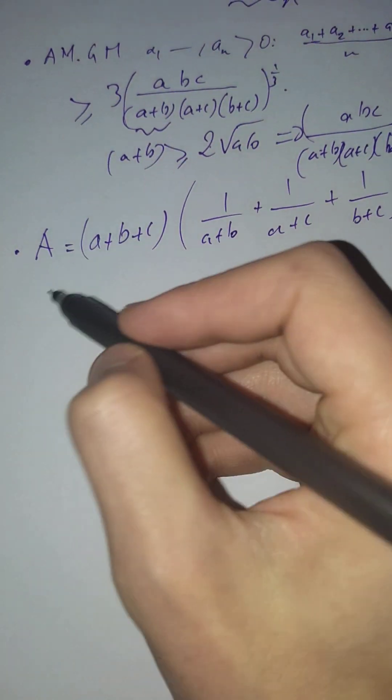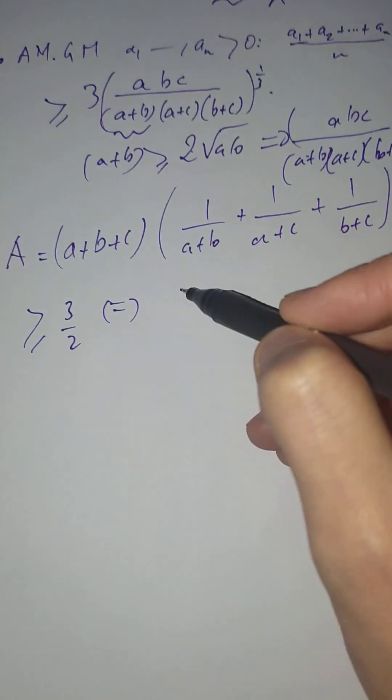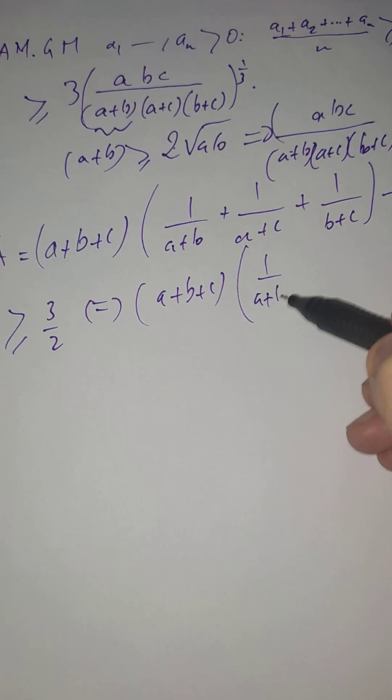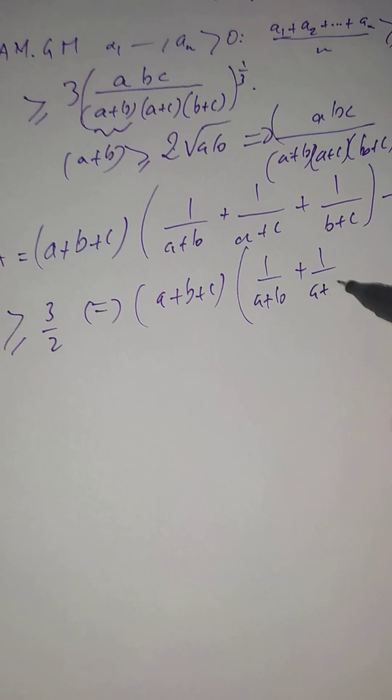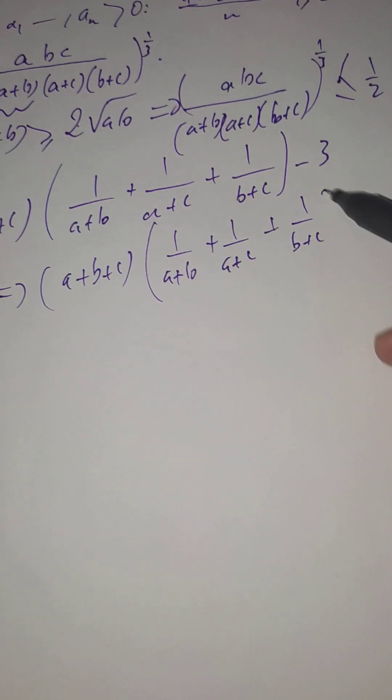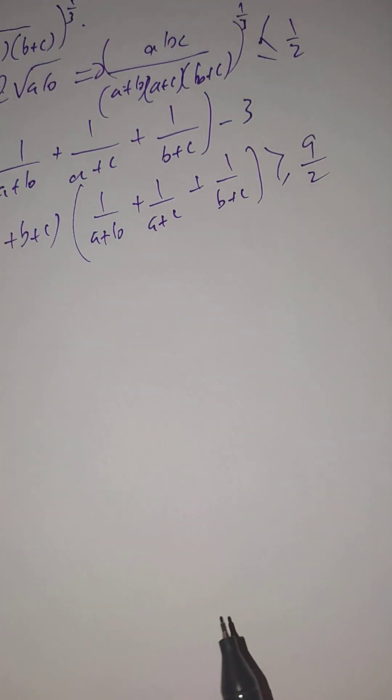So if this is bigger than 3 over 2, then this is equivalent to saying that (a plus b plus c) multiplied by (1 over a plus b plus 1 over a plus c plus 1 over b plus c) is bigger than 9 over 2.